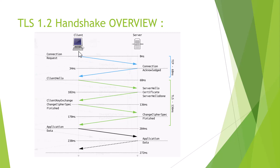The server also sends its own random number — similar to the client's random number — to prevent replay attacks from hackers. The server also selects the cipher suite, compression algorithm, and encryption algorithm from those offered by the client.